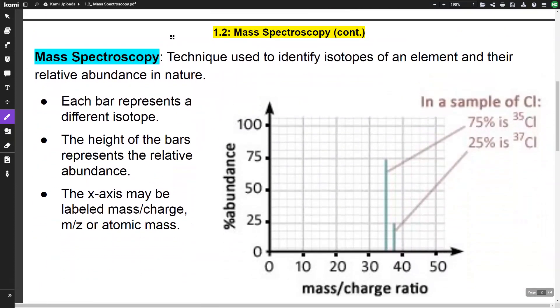So here's mass spectroscopy. Mass spectroscopy is a technique used to identify isotopes of an element and their relative abundance in nature. We've got a graph here to the right. Each bar represents a different isotope. We've got one bar here and we have one bar here. The height of the bar represents the relative abundance. If you look at our y-axis, it talks about percent abundance. So I would want to follow the very top of my bar over to the y-axis, and that would tell me my relative abundance.